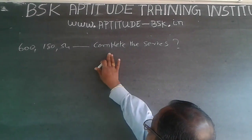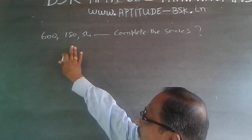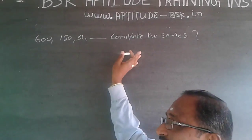600, 180, 54 dash - complete the series. Next question is 600, 180, 54 - complete the series. So this is a contrary question on number series.